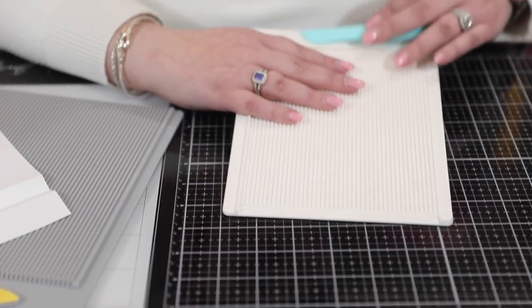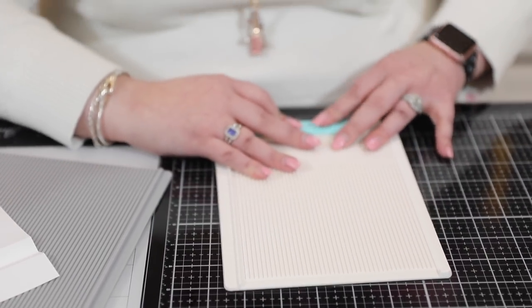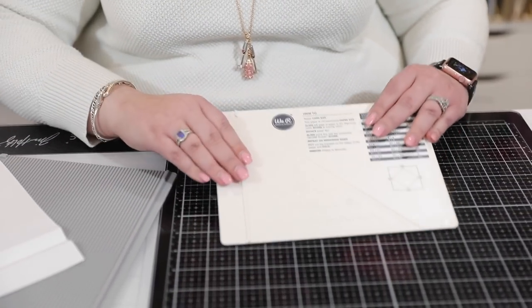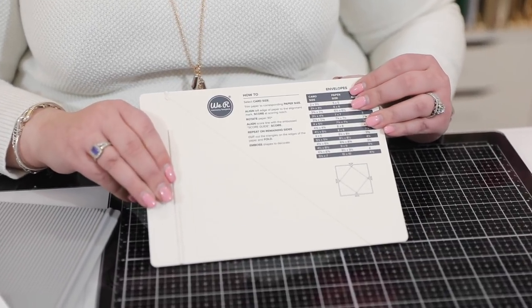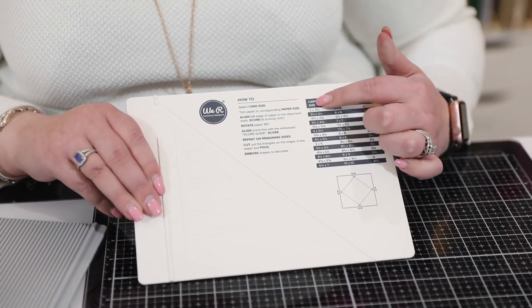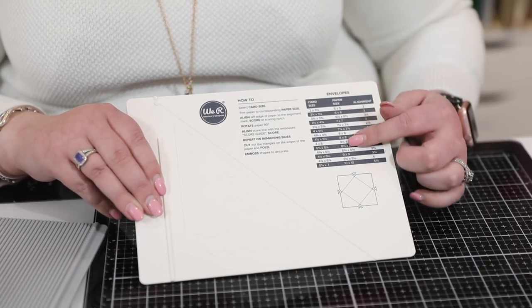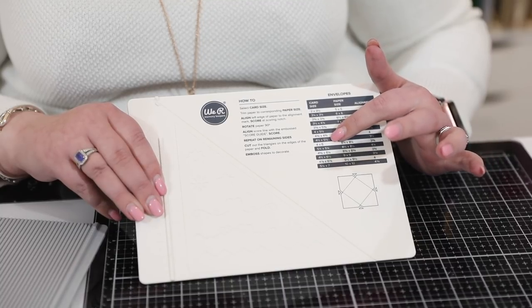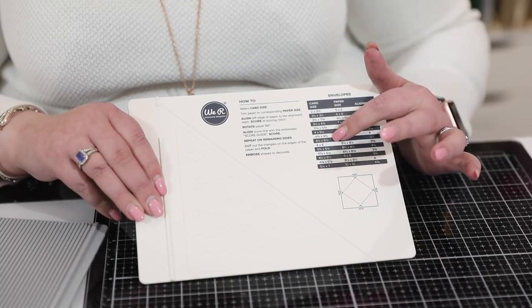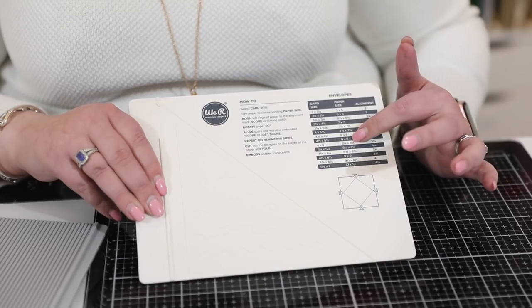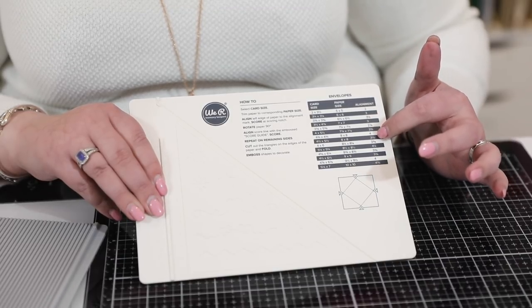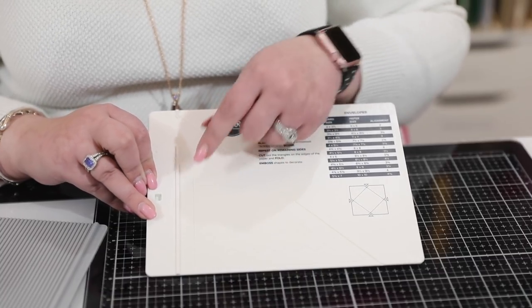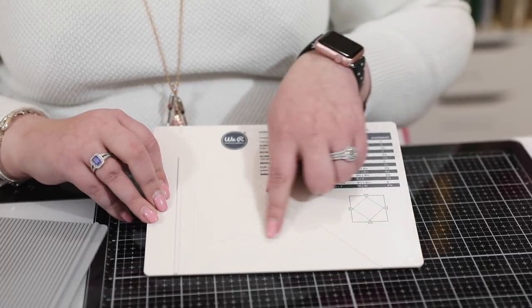I can take my little tool and I can put it on the top there and that is one of the most secure. The other thing about the We R is on the back you have an envelope score guide. You can see here you have your size of card, you have the size of paper you're going to need to create your envelope. For instance, if I have my 4.5 by 5.5 card, I'm going to need an 8 by 8 piece of paper and I'm going to need my 3.5 alignment. My 3.5 alignment makes sense down the side here. That's where I'm going to start my scoring and then you have all your score guides. I also have these fun designs in here that I can emboss into things, so it just has a little bit extra in there.